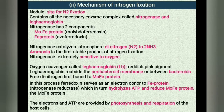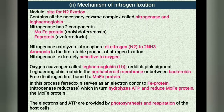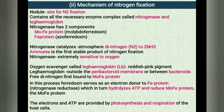To protect the nitrogenase enzyme, the nodule contains an oxygen scavenger called leghemoglobin (LB), which is a reddish pink pigment. Leghemoglobin is located either outside the peribacteroid membrane or in between the bacteroids. During nitrogen fixation, the free dinitrogen first binds to MoFe protein and is not released until completely reduced to ammonia. The reduction of dinitrogen is a stepwise reaction in which many intermediates are formed, producing ammonia (NH3), which is protonated at physiological pH to form ammonium (NH4+). Ferredoxin serves as an electron donor to the Fe protein, which in turn hydrolyzes ATP and reduces the MoFe protein, which then reduces the substrate nitrogen. The electrons and ATP are provided by photosynthesis and respiration of the host cell.